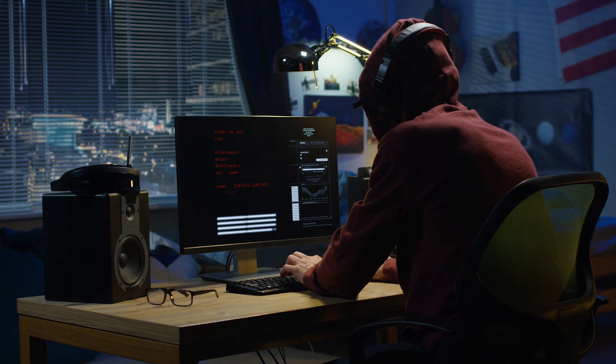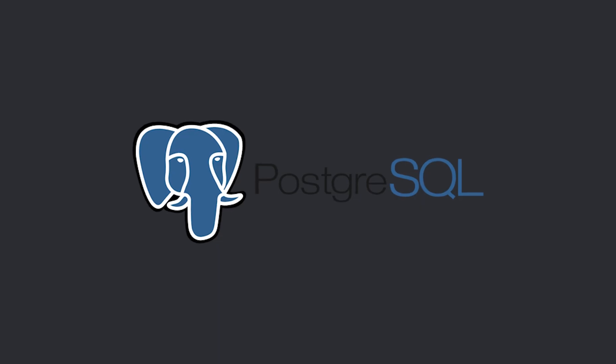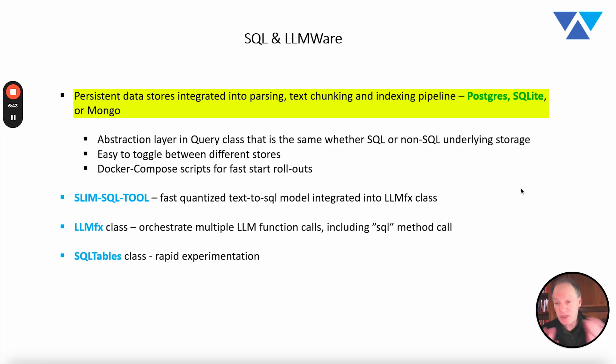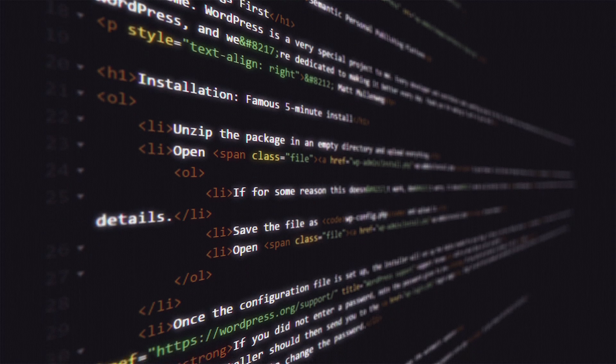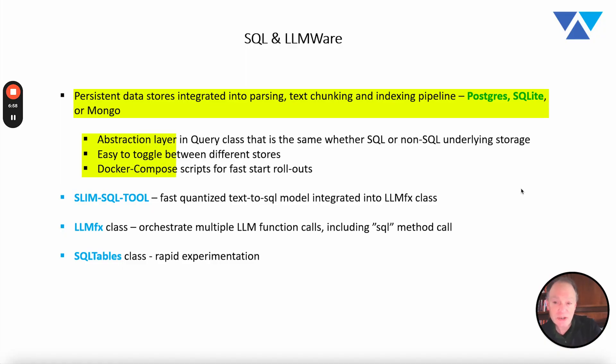First thing, as most of you know if you've used LLMware in the past, we have persistent data stores that are built entirely into the parsing, text chunking, and indexing pipeline. We support Postgres, we support Mongo, we also support SQLite. SQLite we're actually going to use here because it's a great way to do it without having to install anything, without having to use Docker, without using any kind of production data store. It's a great way to experiment locally and privately. What we've also done is we've put an abstraction layer. So the information that goes into Postgres, SQL, or Mongo is all queried in LLMware the exact same way. Regardless of how it's stored in the underlying data store, there's this abstraction layer which enables you to work across these multiple components.